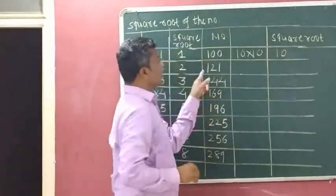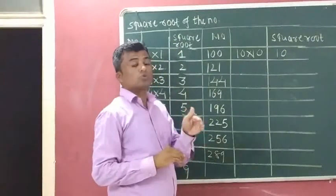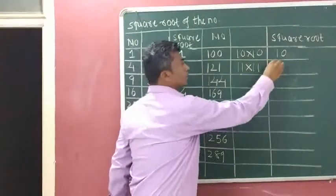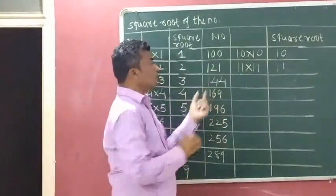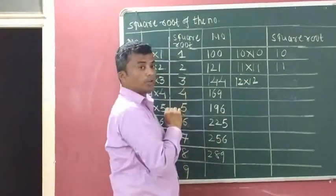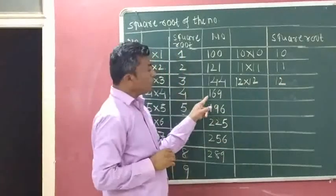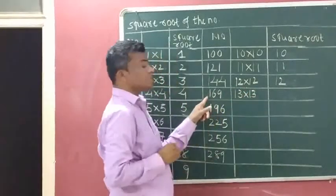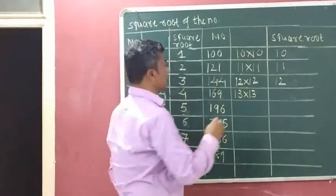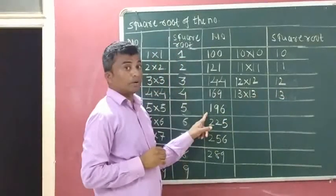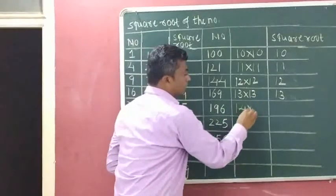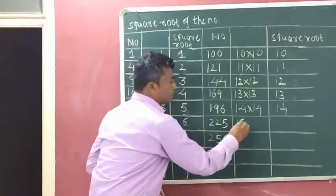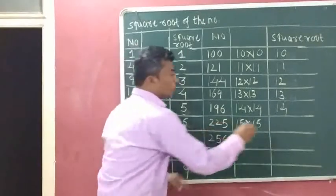Square root of 121: 11 times 11 is 121, so square root of 121 is 11. Square root of 144: 12 times 12 is 144, so square root of 144 is 12. Square root of 169: 13 times 13 is 169, so square root of 169 is 13. Square root of 196: 14 times 14 is 196, so square root of 196 is 14. Square root of 225: 15 times 15 is 225, so square root of 225 is 15.